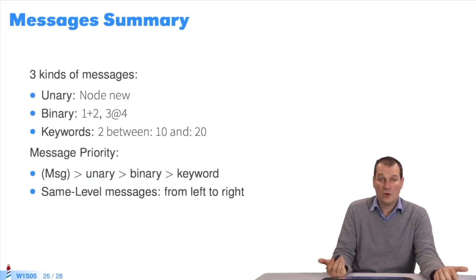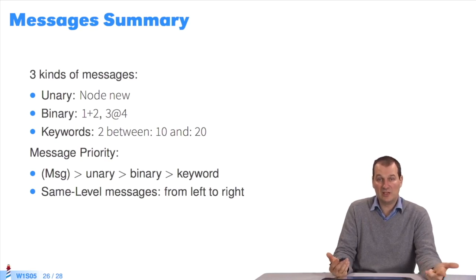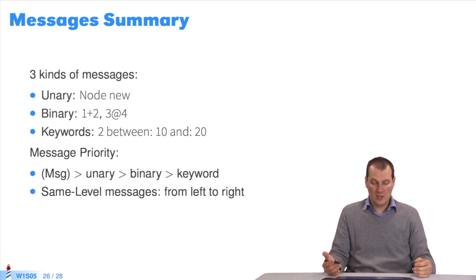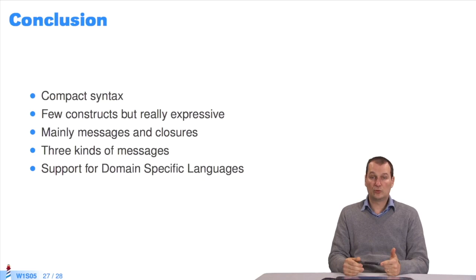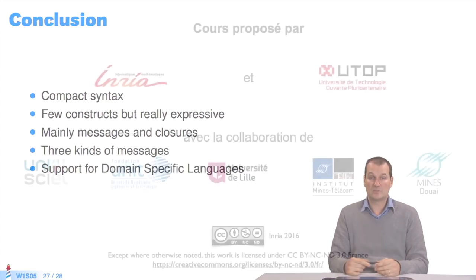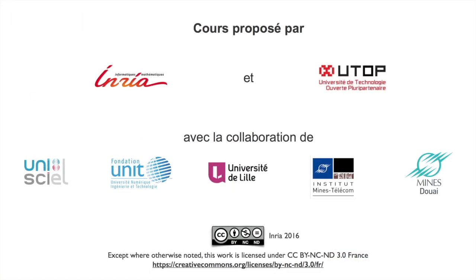To sum up, what have we seen? There are three kinds of messages: unary messages without arguments, binary messages where the selectors are mathematical, and keyword messages where there can be several arguments. There's a priority: parentheses first, then unary, binary, and keyword. If there are same-level messages, it's from left to right. The syntax is very compact — there are few constructs, but they're really expressive. It's mainly messages and lexical closures, or blocks. You'll do an exercise to develop a language, so you can define what we call domain-specific languages.